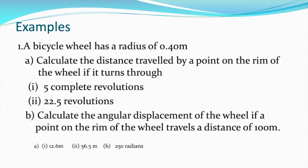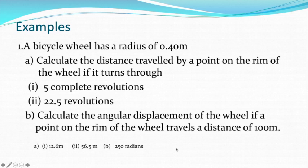That equation S equals theta times R can also be used in reverse. If you want to work out what the angular displacement is, theta equals S over R, where S is the total distance that you've covered. So 100 divided by 0.4 means you've turned through 250 radians. You can pause that and try it on a bit of paper. So the distance you turn through is related to the angle you turn through, if the angle is measured in radians and you know the radius of the circle.